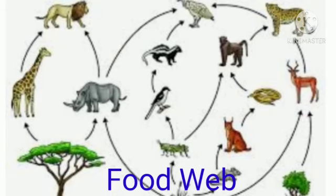Now see the food web. An ecosystem consists of different types of food chains which are interconnected at various levels, forming an intricate web instead of a linear chain. This kind of intricate network is called a food web.